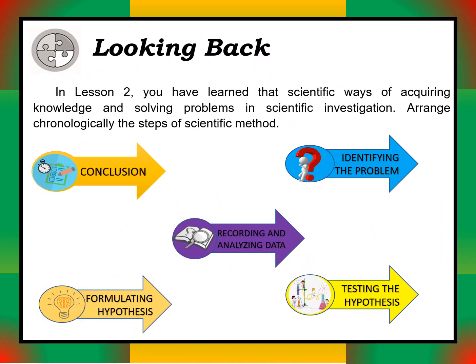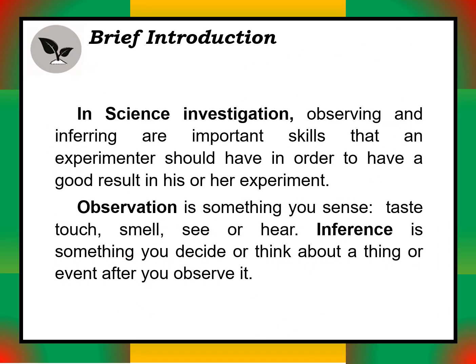Looking back at lesson two, we learned the scientific ways of acquiring knowledge and solving problems. Observation is something you sense — taste, touch, smell, see, or hear. Inference is something you decide or think about the thing or event you observe. In observation you use your five senses; in inference you use your critical mind.